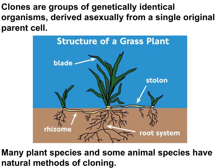Many species of plants can grow shoots, stolons, or rhizomes that produce genetically identical plants. The three plants in this diagram are genetically identical organisms — clones — derived from a single original parent cell through asexual cell division.